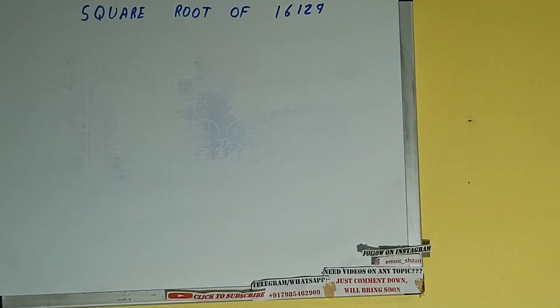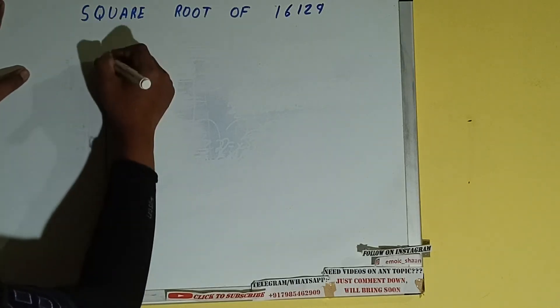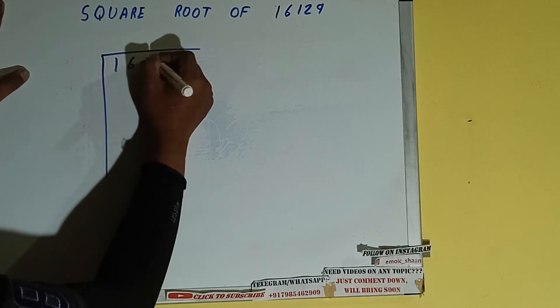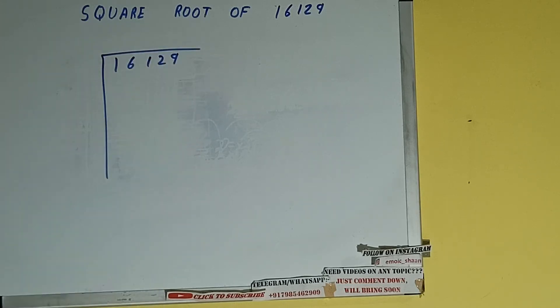Hello friends, in this video I'll be helping you with the square root of the number 16129. Let's start. First of all, we need to write the number like this: 16129. Next thing we need to do